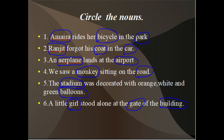Sentence six: A little girl stood alone at the gate of the buildings. Girl is a person, gate and buildings refer to things and places. So girl, gate, and buildings are nouns. You may have a doubt about sentence five — orange, white, and green describe the balloons, so they are adjectives. Only stadium and balloon are nouns in that sentence.